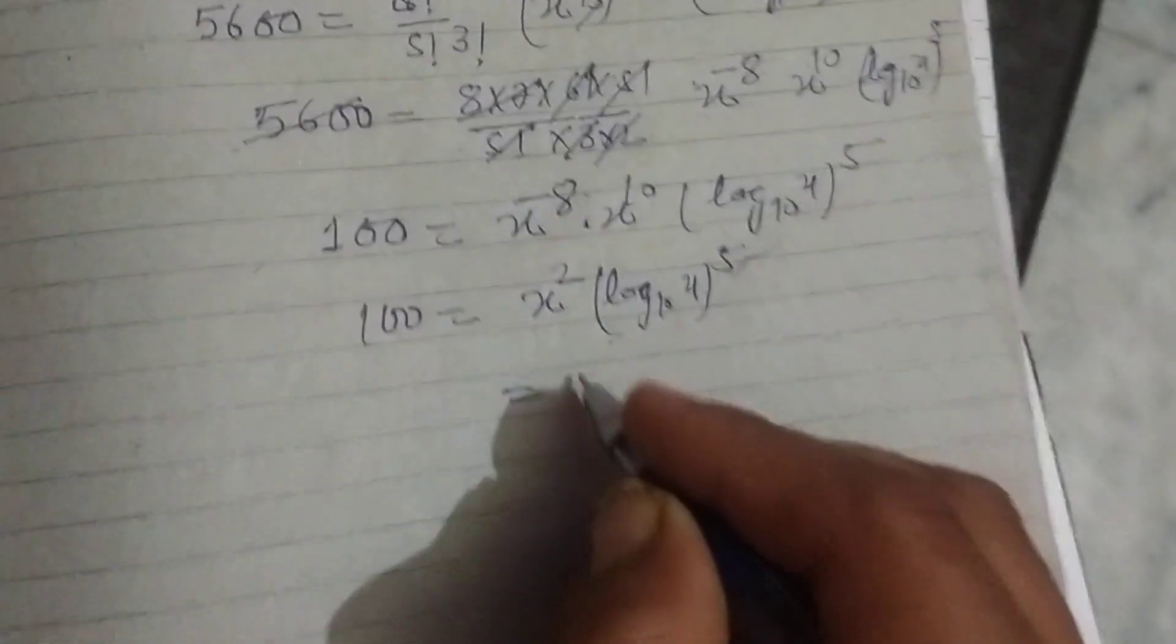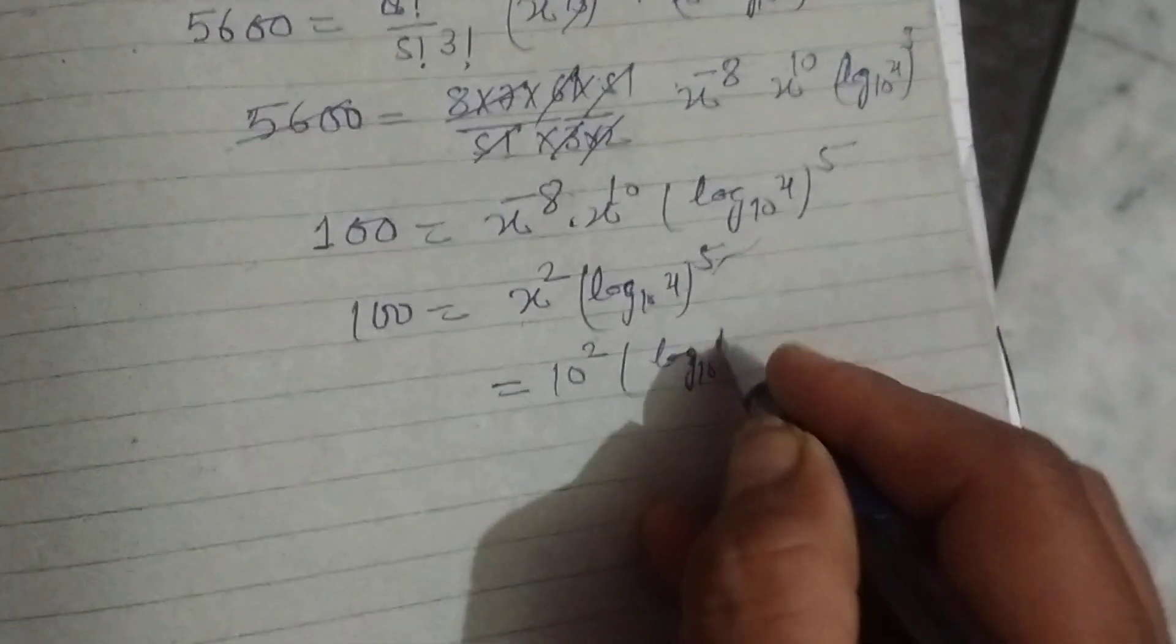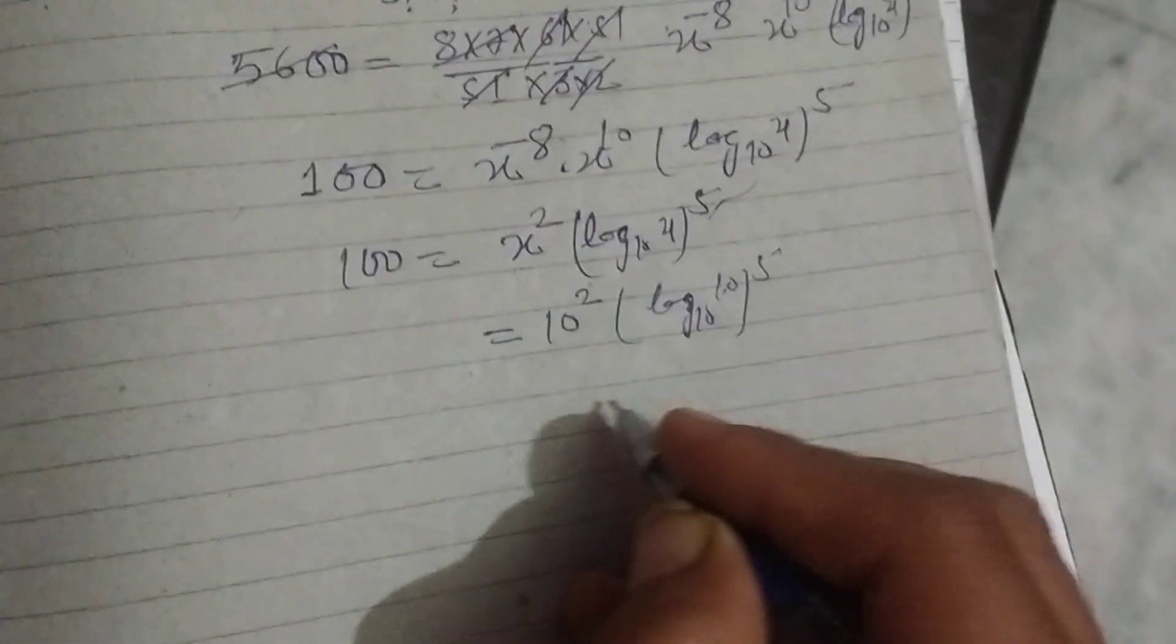When we put 10 in this, x value of 10, 10 squared. This is log base 10 of x to the power 5, which is 1.